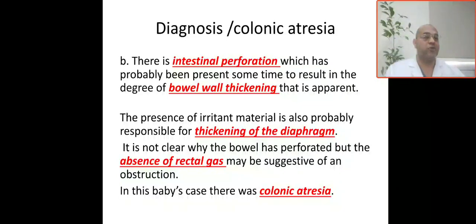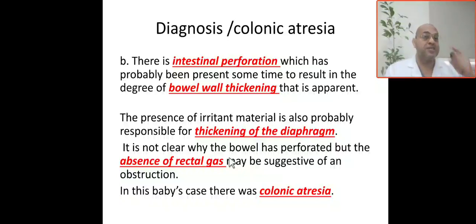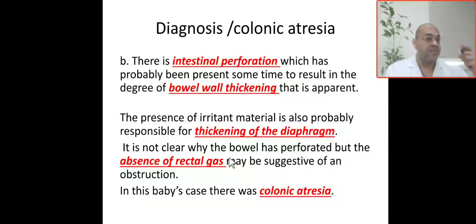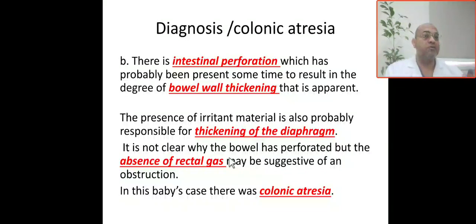Diagnosis: this is intestinal perforation based on the free air under the diaphragm. The bowel loop thickness has been present for some time, suggesting this has been a long-standing perforation. If there is bowel wall thickness, it means this perforation has been present for a long time. The presence of irritant material is also probably responsible for thickening of the diaphragm.